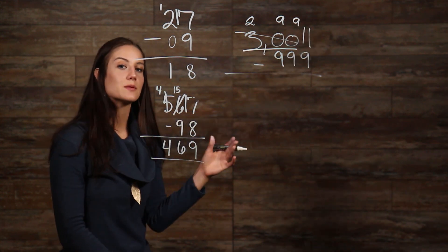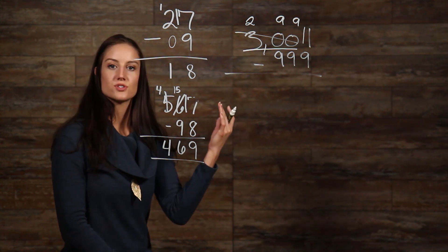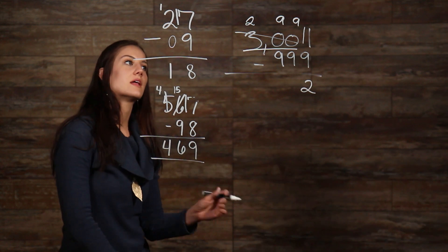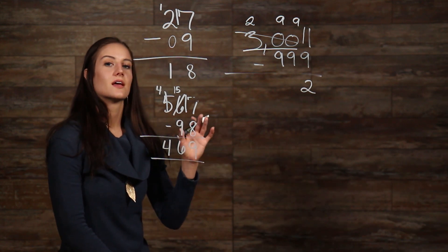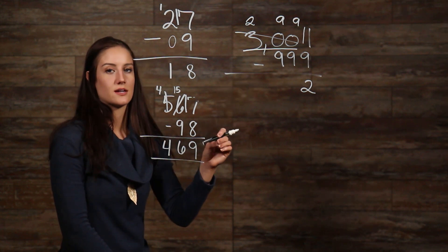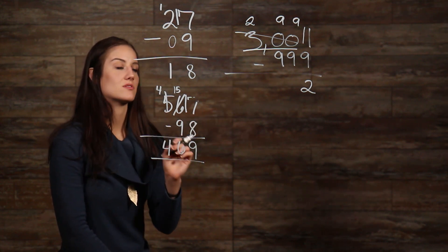So, now we have 9 being subtracted from 11, which is 2. So, we carry down that 2. Then, when we go over to our next place, we have 9 minus 9, which is 0, and another 9 minus 9, which is 0. So, we can just carry both of those two zeros down.